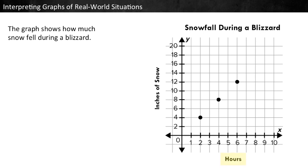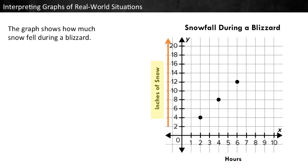The x-axis shows hours, and it counts by ones. The y-axis shows inches of snow, and it counts by twos. Now we can use the graph to answer questions about this blizzard.